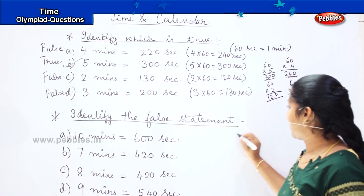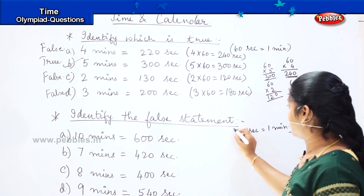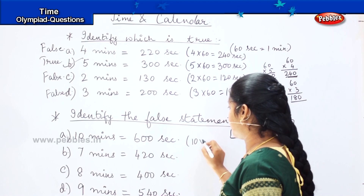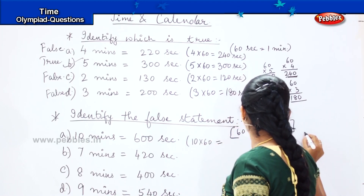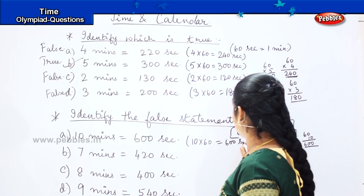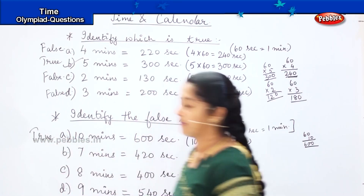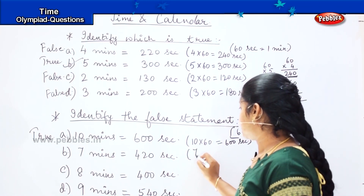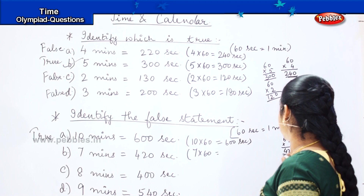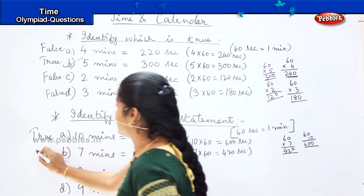For option A, 10 minutes: 10 into 60 equals 600 seconds. That matches, so it is true. For option B, 7 minutes: 60 into 7 — 6 sevens are 42 — so it should be 420 seconds. That matches, so it is true.